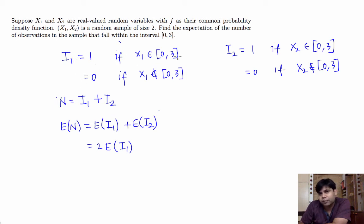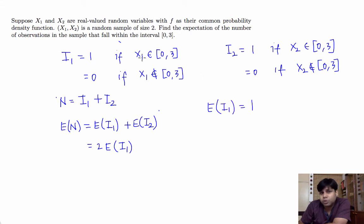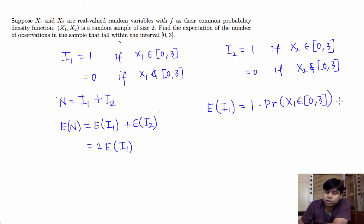i1 takes value 1 if x1 belongs to the interval 0 to 3, and 0 if x1 does not belong to 0 to 3. So the expected value of i1 equals 1 times the probability that i1 equals 1 — which is the probability that x1 belongs to 0 to 3 — plus 0 times the probability that x1 does not belong to 0 to 3. This is simply the integral of the density f from 0 to 3.